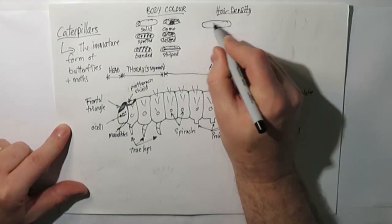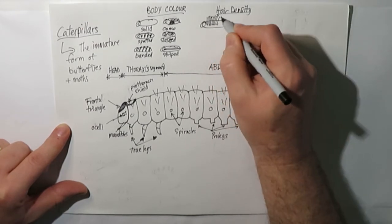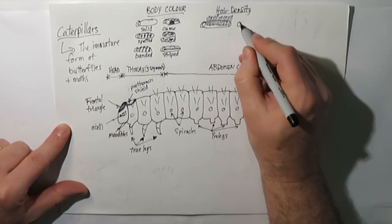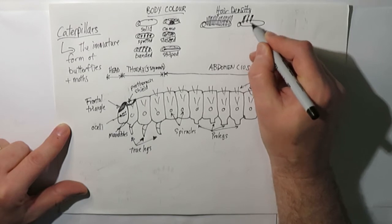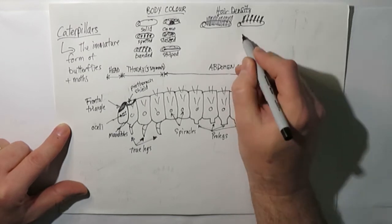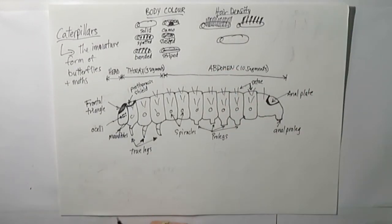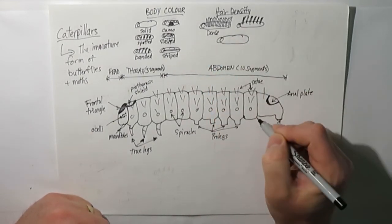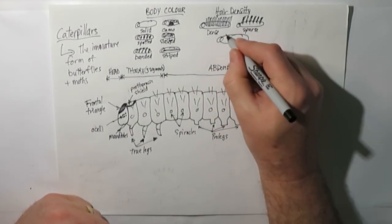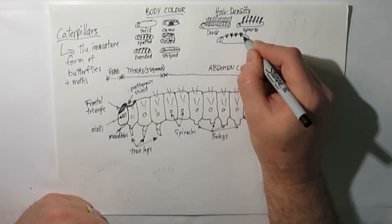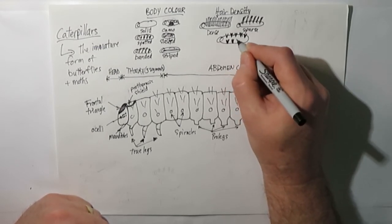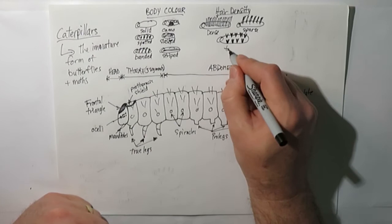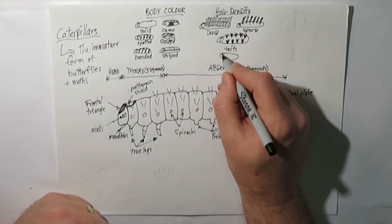The density of the hair on the body can differentiate between different caterpillars. In some cases you might have it where the whole thing is just one big little fluff ball. You might have some that have none. You might have ones that have little tufts. This first one is dense hair, this one is sparse, and this one would be tufted. Then you could have one that has either no hair or inconspicuous hair.